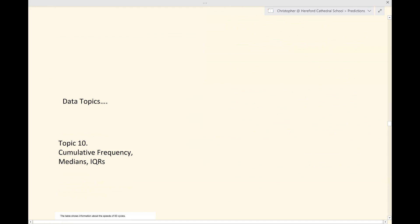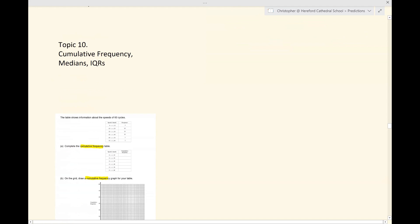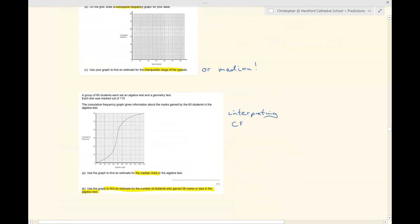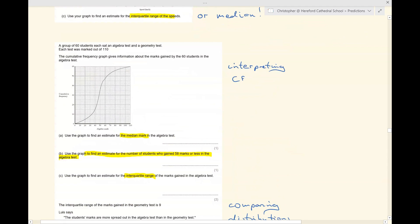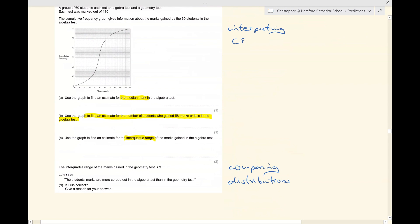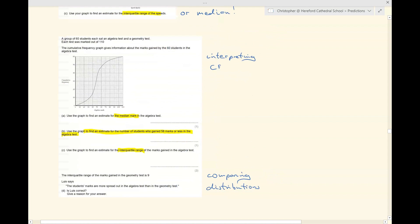Data now. We haven't had any cumulative frequency. We haven't had any medians or interquartile ranges. Questions sometimes take the form of you having to draw a cumulative frequency graph and then use the graph to find a median or an interquartile range. And sometimes they take the form of you being given a cumulative frequency graph and being asked to read data off there, for instance, find the median, or here you are in part B, estimating the number of students who gained 58 marks or less. Find the interquartile range. And then you might also be asked to compare distributions as well. So we haven't seen any of that yet.